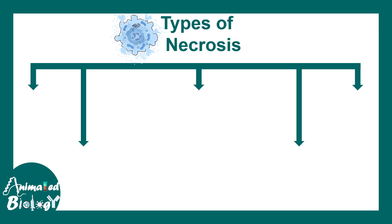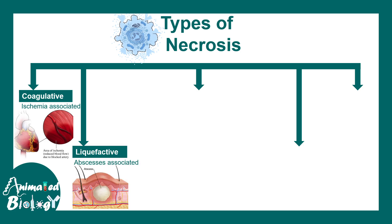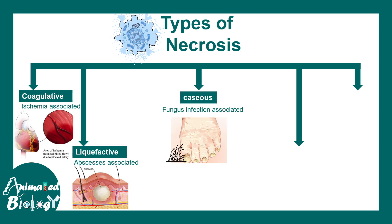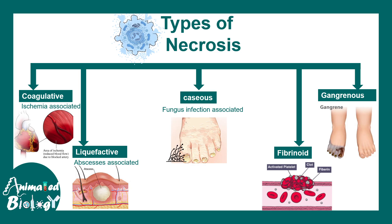Let's talk about the types of necrosis. We have coagulative necrosis, which is often ischemia-associated. We have liquefactive necrosis, which is most likely associated with abscess or bacterial or fungal infections. Then caseous necrosis, which is often associated with fungal infection and has a prominent cheese-like appearance. There is also fibrinoid and gangrenous necrosis.